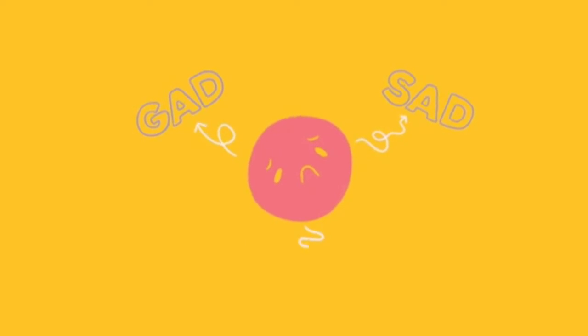Anxiety disorders rarely appear alone, with depression being a common co-diagnosis. Anxiety disorders come in a few varieties: Generalized Anxiety Disorder (GAD), Panic Disorder, Social Anxiety Disorder (SAD), and Obsessive Compulsive Disorder (OCD).